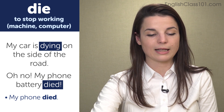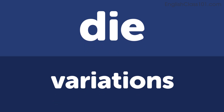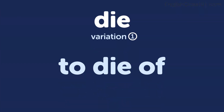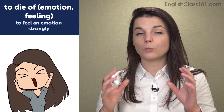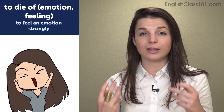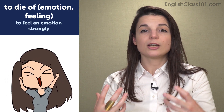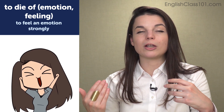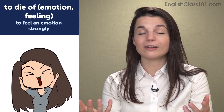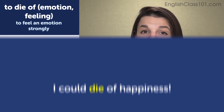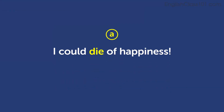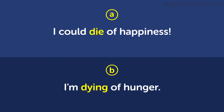Those are a couple of additional meanings. Now let's go on to some variations for the verb 'die'. The first variation is to die of an emotion or to die of a feeling. This is an expression we use when we feel that emotion or sensation very strongly — so strongly we feel like we could die of, or die from, that thing. Examples: I could die of happiness. I'm dying of hunger.